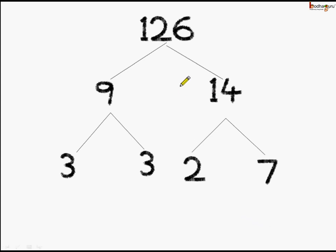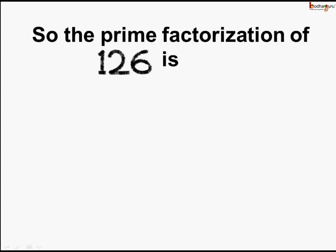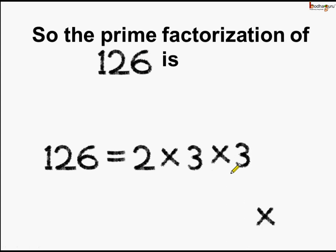If we see, 3 multiplied by 3 multiplied by 2 multiplied by 7 will give us 126. We considered the bottom-most branch, and it consists of 3, 3, 2, 7. So, the prime factorization of 126 is equal to 2 multiplied by 3 multiplied by 3 multiplied by 7. We made a factor tree and considered the bottom-most branch only, which has only the prime numbers. The tree was made until we got all the prime factors of the number.